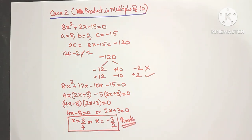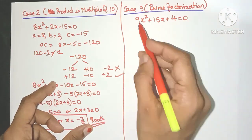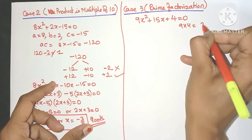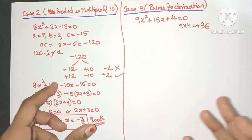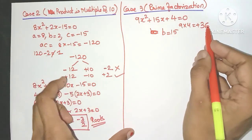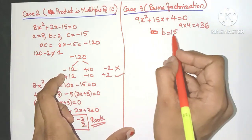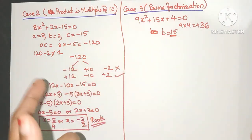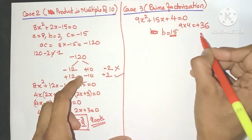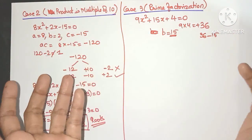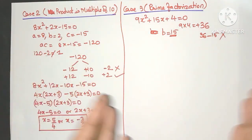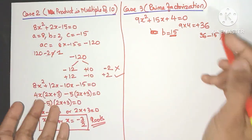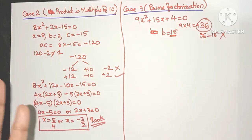Now let's discuss the third case. Here the quadratic equation gives the product of 9 and 4 as 36. We need factors of 36 that add up to 15, the middle term. Case 1 check: 36 minus 15 is 21, not 1, so Case 1 won't work. For Case 2, 36 is not a multiple of 10, so Case 2 doesn't qualify either. So now comes Case 3.